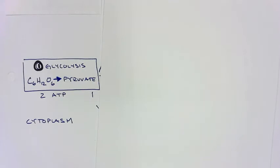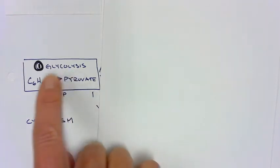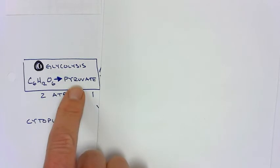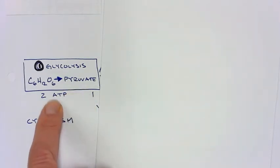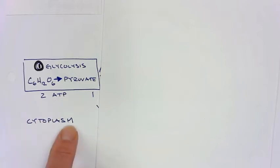Here are the three basic steps of cellular respiration or aerobic respiration. The first one is called glycolysis, where we convert glucose into pyruvate. We receive two net gain of ATP, and this occurs in the cytoplasm of the cell.